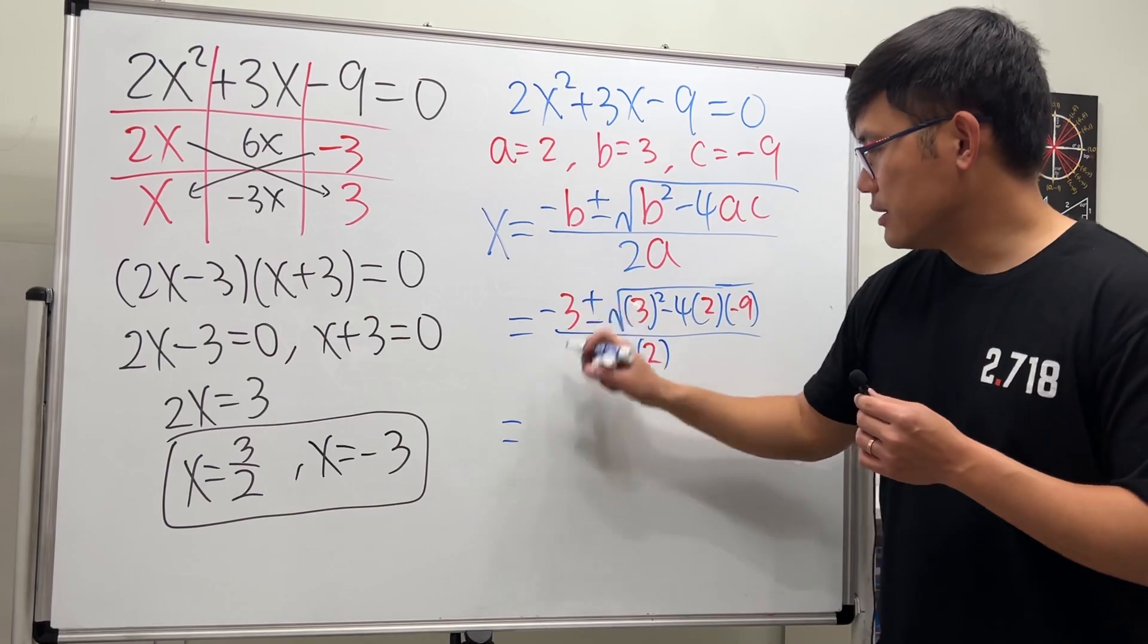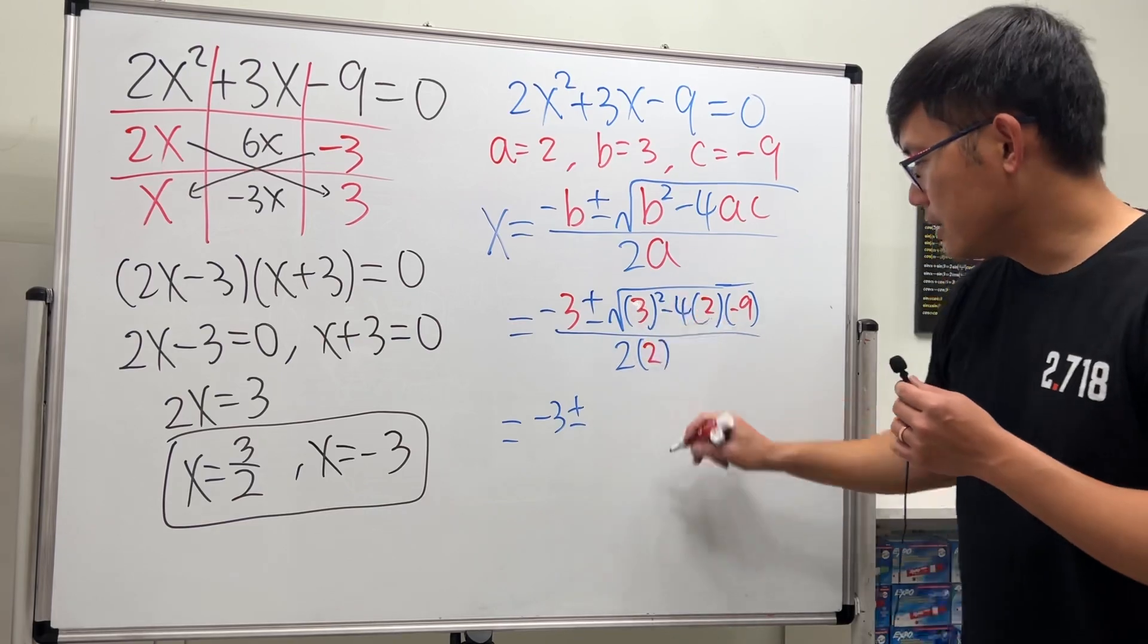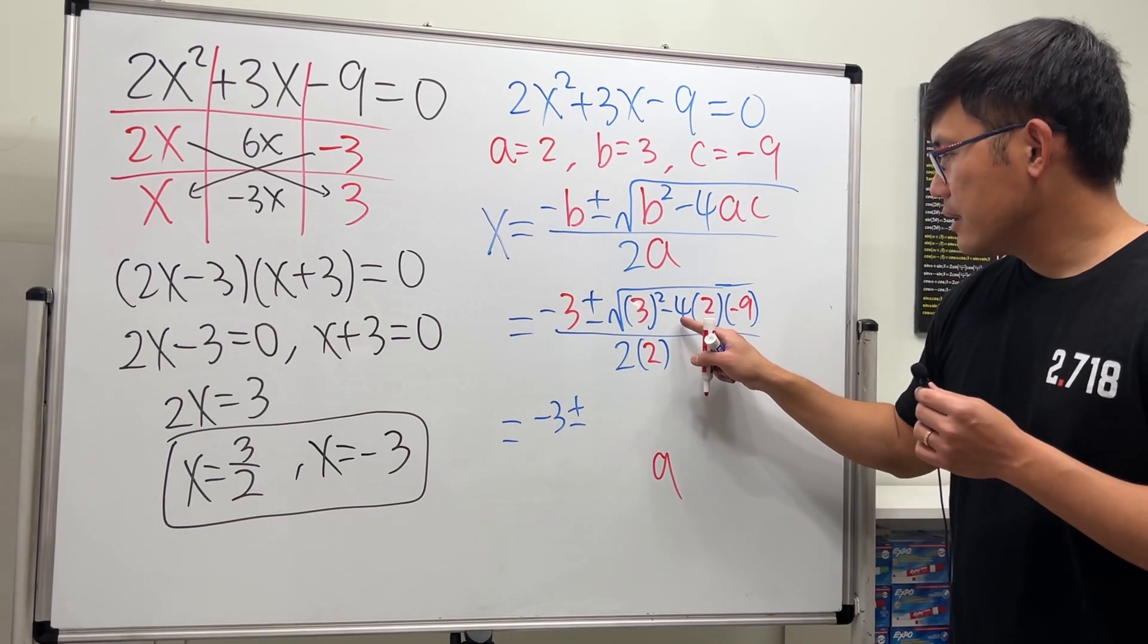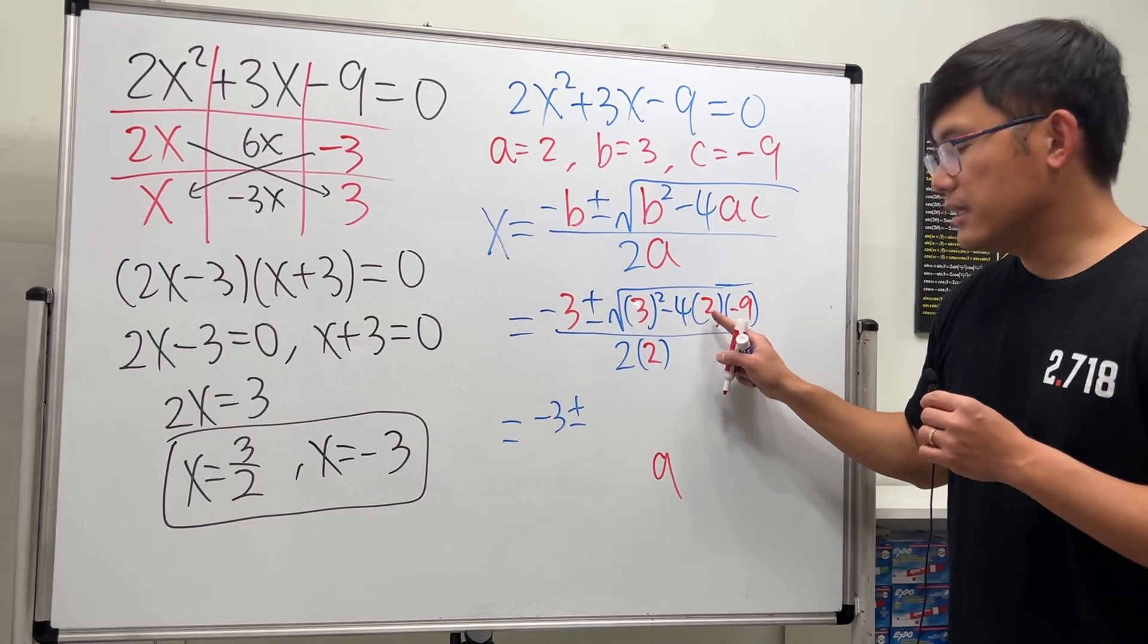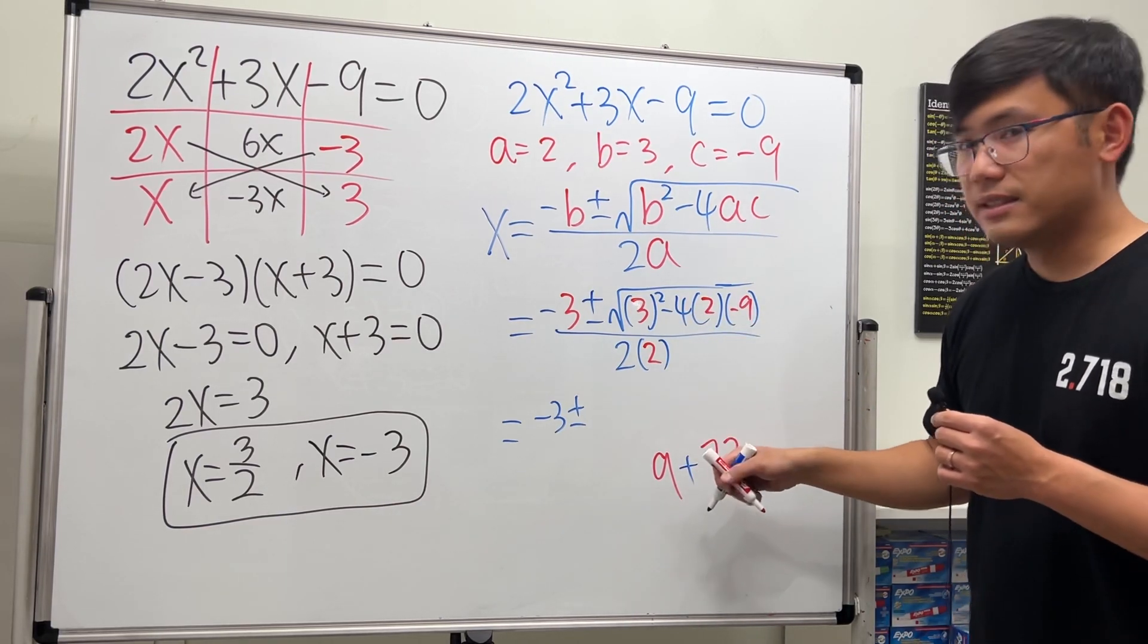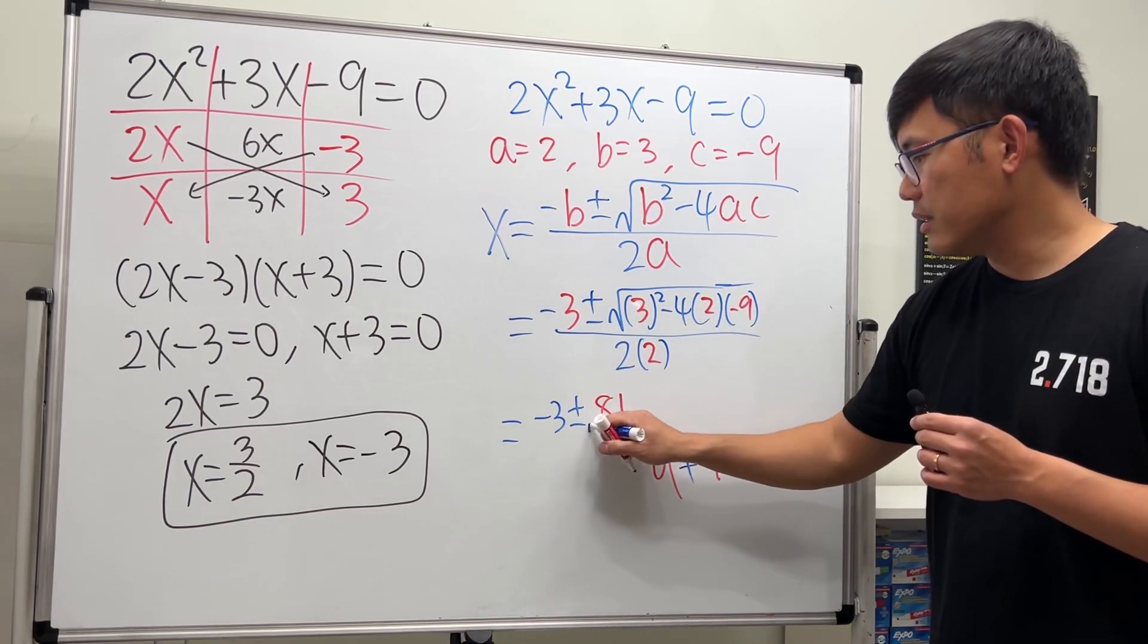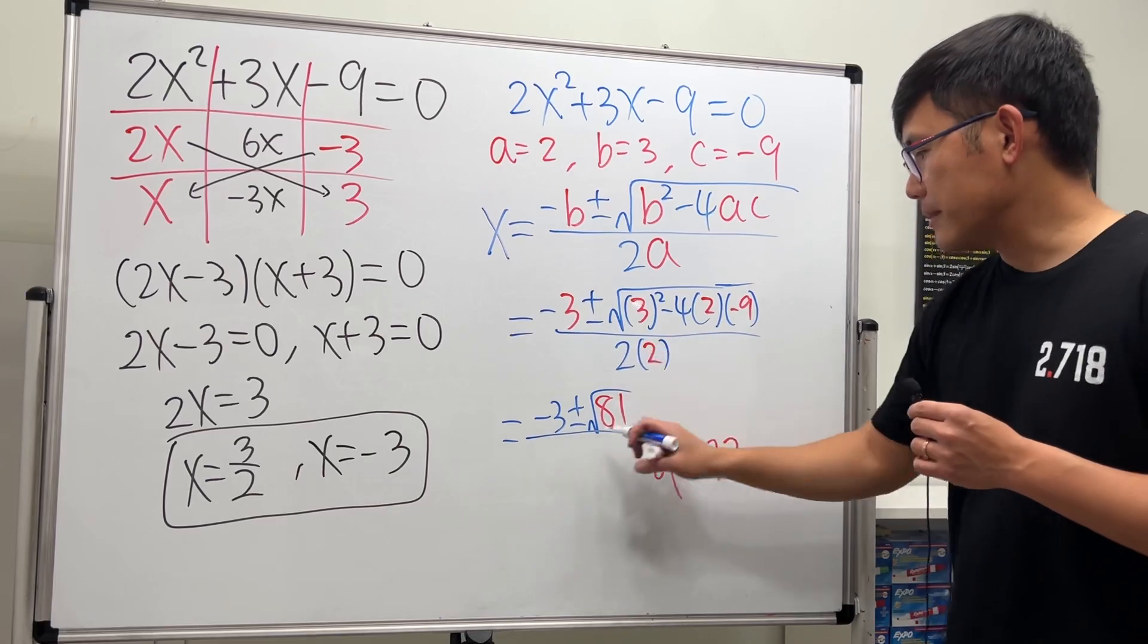Okay, so this is negative 3 plus or minus—3 squared is 9, and then 4 times 2 is 8, 8 times 9 is 72, but negative times negative is plus, and altogether it's 81 inside, so we have the square root of 81 here. 2 times 2 is 4.